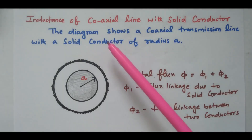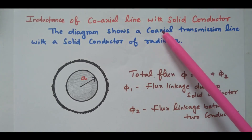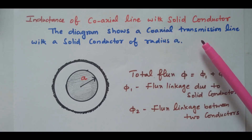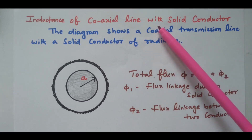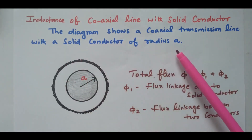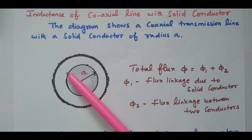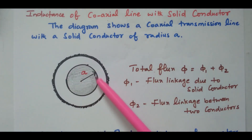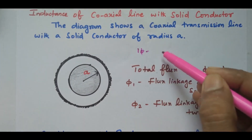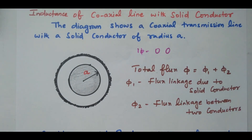Welcome viewers. In this video we will see the inductance of a coaxial line with a solid conductor — only one conductor available. In the previous video the inductance of a coaxial cable with two conductors was available. This video has only one solid conductor of radius A meter. For transmitting single phase power we need one more conductor.